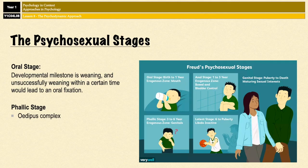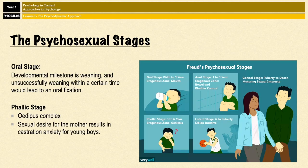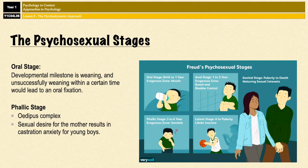During this time, the boys experience something called castration anxiety — effectively, the boys are scared that their father is going to realize how they feel about their mother and then castrate them. As a result of that anxiety, the boys repress their feelings for their mothers, banishing them into the depths of their unconscious mind. Then, as a result of that, they start to identify with their fathers, internalizing the gender roles and the father's values and morals, which ultimately leads to the resolution of the Oedipus Complex and also to the development of the superego.